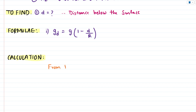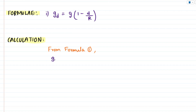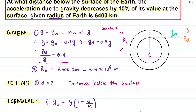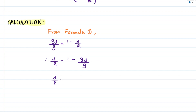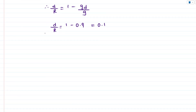Starting the calculation: from the formula, gd equals g times (1 minus d upon R). We need to rearrange to find d. Dividing both sides by g, the left-hand side becomes gd upon g, and the right-hand side becomes 1 minus d upon R. Rearranging further: d upon R equals 1 minus gd upon g. Since gd upon g equals 0.9, we get d upon R equals 1 minus 0.9, which is 0.1.